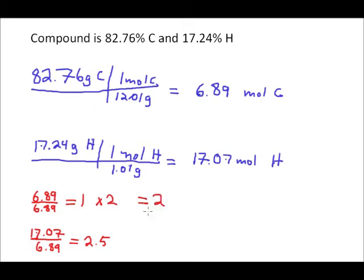So that'll be 2 here, multiplied by 2 here. That will be equal to 5. So the empirical formula of this compound is C2H5.